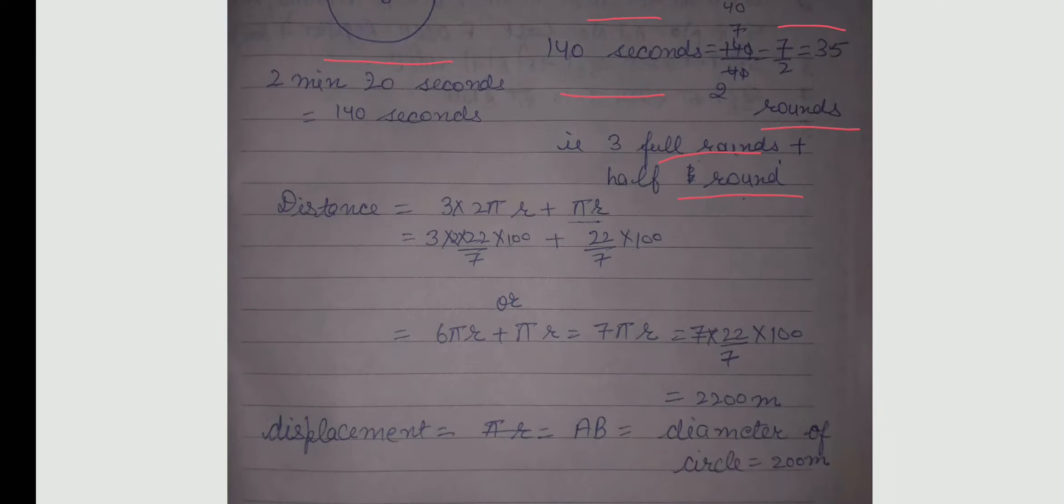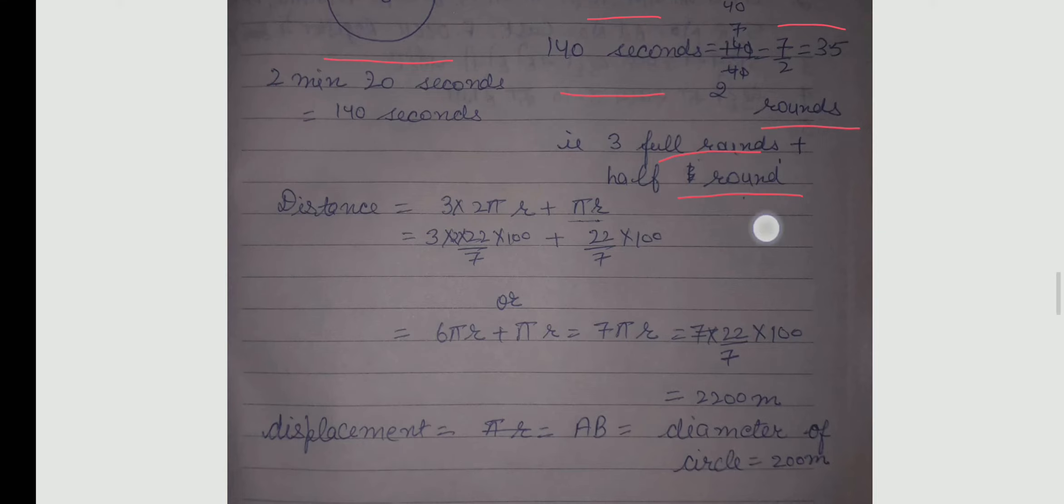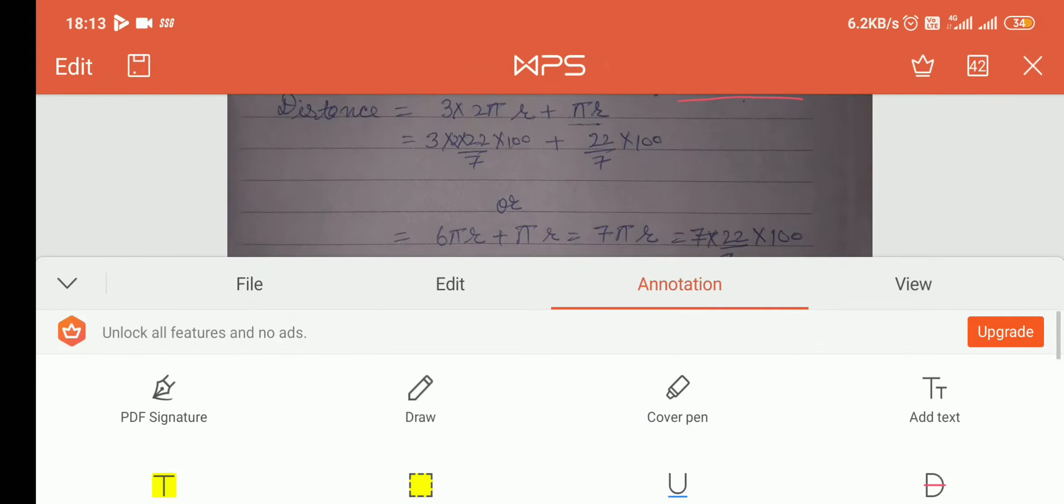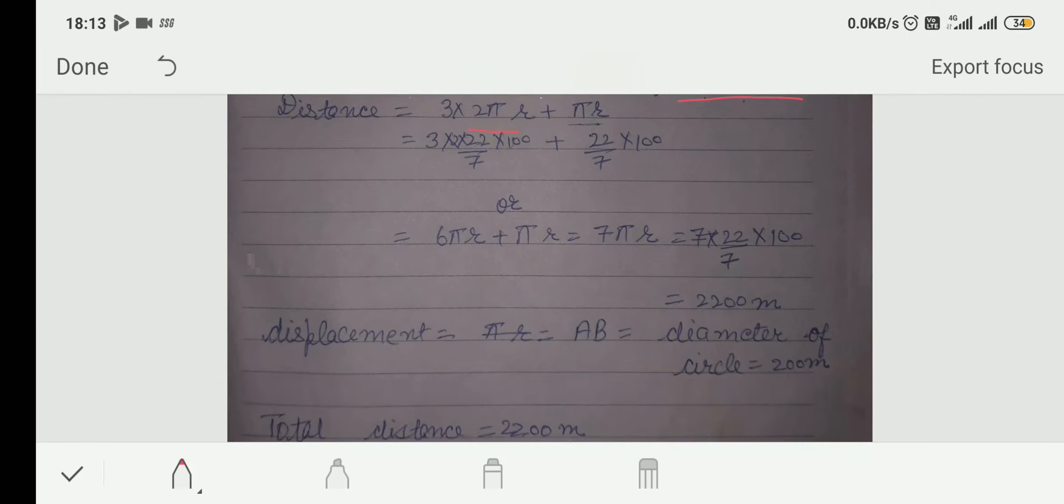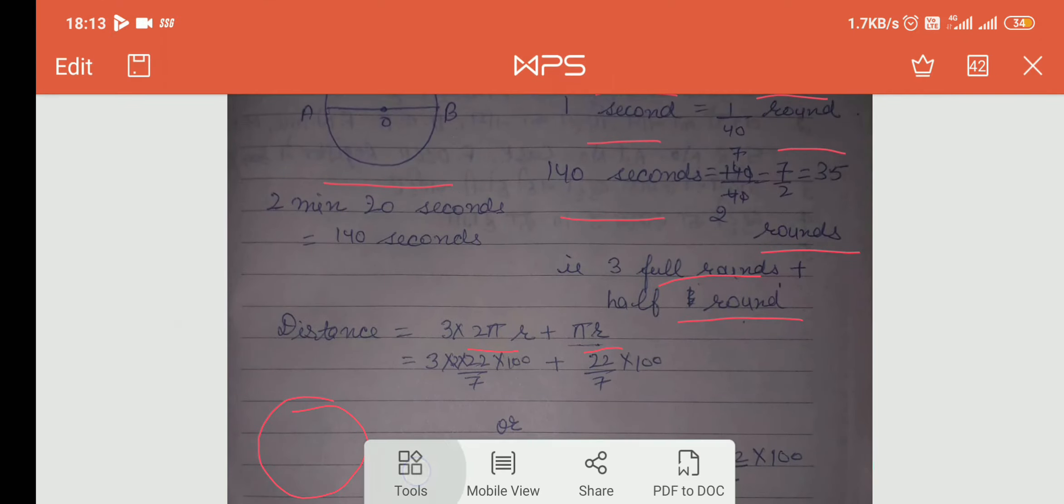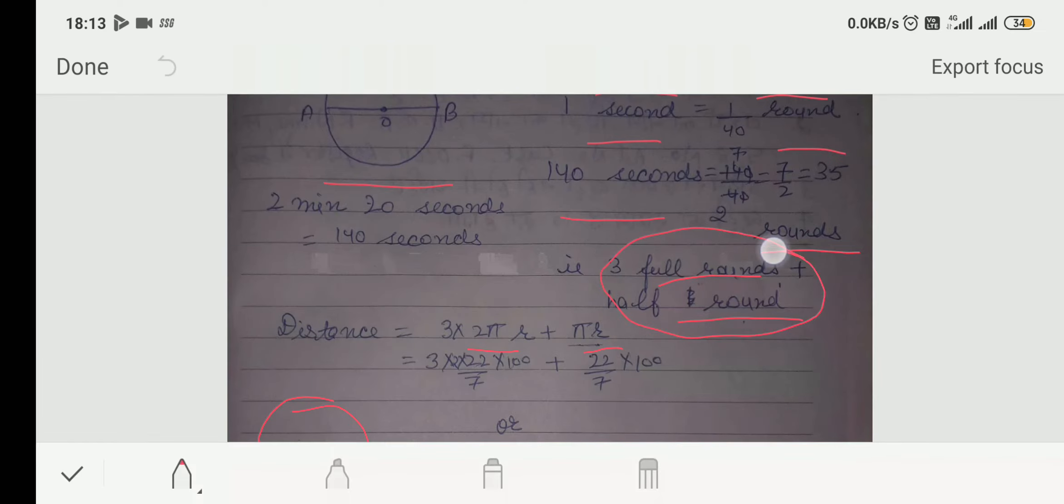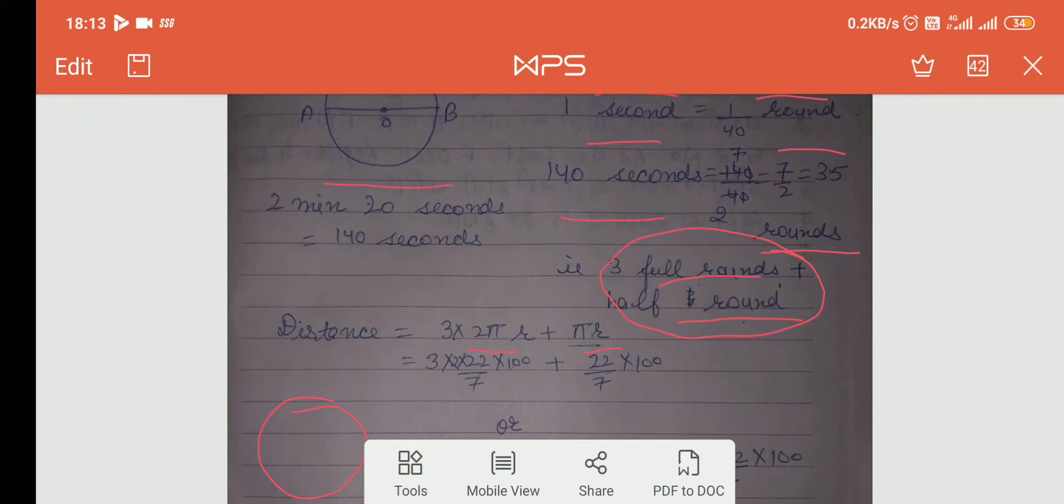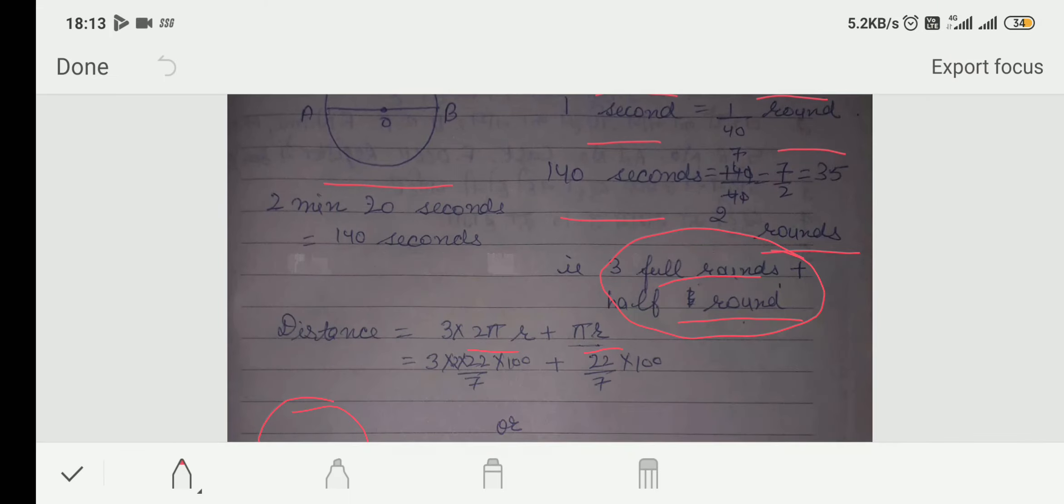So, first I will calculate distance. In last numerical, we only calculate displacement. So, how we will calculate distance here? Here I have written 3 into 2 pi r plus pi r by circular track. For one circle, distance will be 2 pi r. But, here you have found 3 full circle. That's why I have multiplied 3 here with 2 pi r. And pi r is for half round.